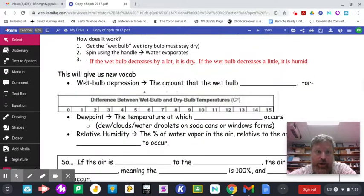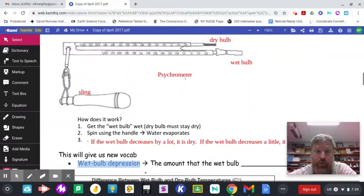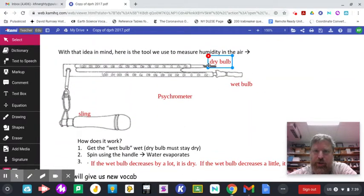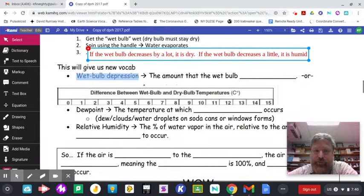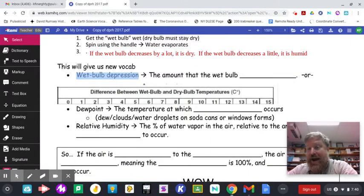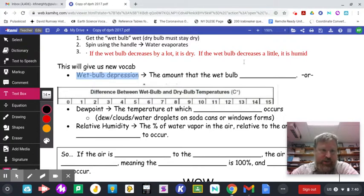All right the first one is I'd say the most commonly screwed up one. Wet bulb depression. If we have a dry bulb, regular thermometer, that's just what the temperature is right. And a wet bulb that once water evaporates off this and cools the temperature on this one's going to go down. Wet bulb depression, that fancy term, is how much did it go down by. Not what did it go down to. How much did it go down by. The amount that the wet bulb decreases is going to be what I type in this thing.